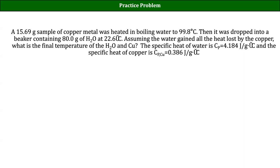It still looks a little intimidating because we haven't started plugging numbers in, but it's just algebra at this point. We've gotten everything down to one equation, one unknown, and we wind up with an answer. The specific heat of copper is about — yeah, so it should be something in the mid-20s for your final answer here. This is the point where you could just plug it into a solver. Once you get here, it's just one equation, one unknown.